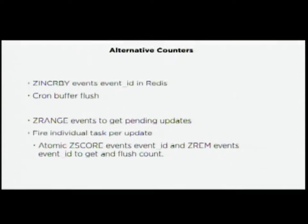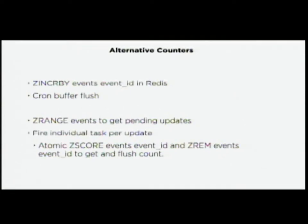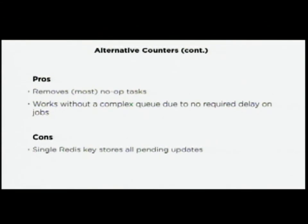This approach uses cron or another scheduler to flush all events every 10 seconds — firing off tasks for all pending counters at once rather than per-event. This solves the wasted CPU cycles problem and still handles a fully distributed workload. You'll need to store all pending updates in a single Redis key with the simple design, but you can fan out across multiple Redis nodes by having multiple keys, one per node. Even for Sentry's workload you could do all of this on a single Redis server.